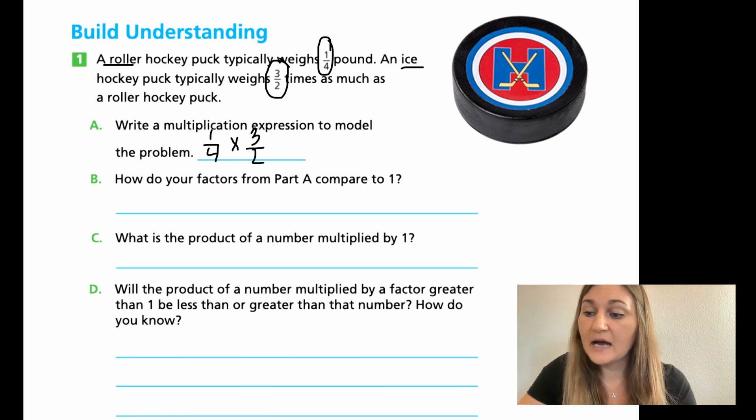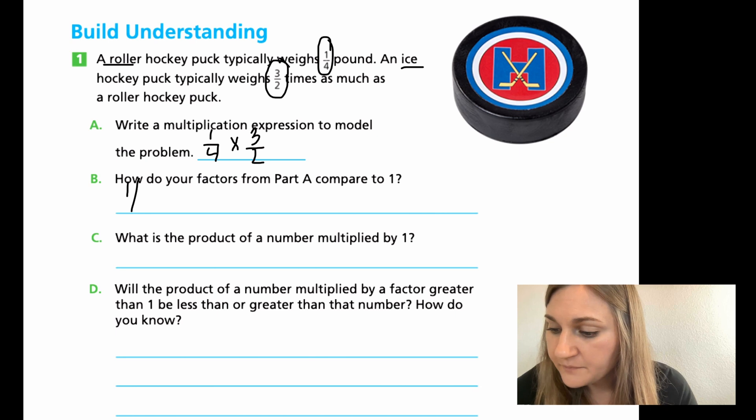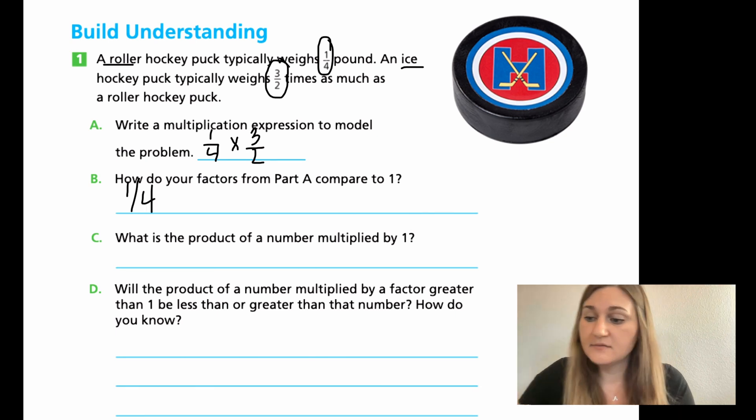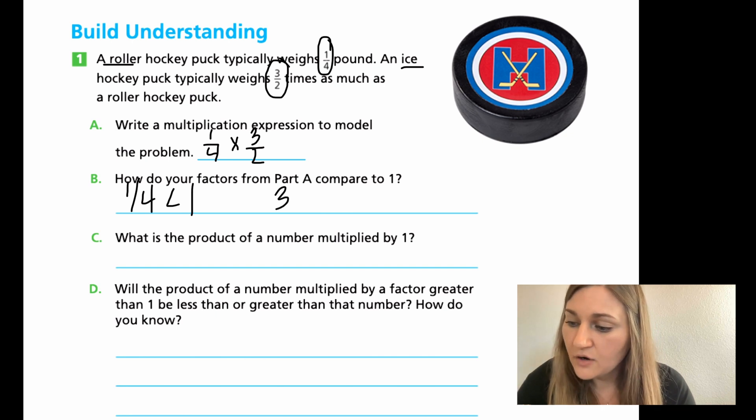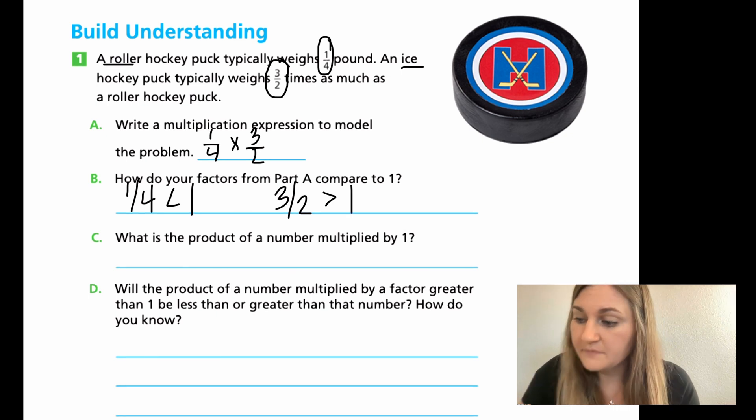So for B, it says, how do your factors from A compare to the number one? So in part A, my factors are the one-fourth and the three over two. Well, my one-fourth, when I compare it using greater than or less than, that would be less than one. To where my three over two, I know that's an improper fraction. And if I have an improper fraction, that automatically means it's greater than one. So this is going to be greater than one.